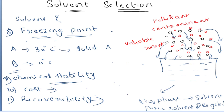So these are the 11 criteria to be followed in choosing a solvent for the absorption process. First is solubility of gas, second is chemical reactivity, third is volatility of the solvent, then corrosiveness, viscosity, flammability, toxicity, freezing point, chemical stability, cost, and recoverability. All these criteria play an equal role in choosing a good solvent for the process, and how well you choose a solvent can affect the efficiency of your absorption process. Thank you.